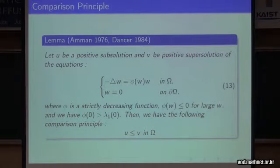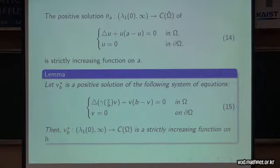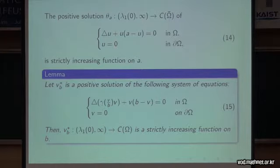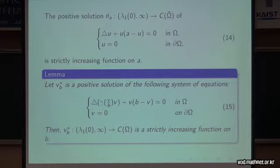We will also use a well-known comparison principle for this model with the same assumption on phi. By this comparison principle, for example, if the equation is of this form, we will denote the positive solution as theta-a. This theta-a is a strictly increasing function in a. Based on the comparison principle, we can show that our semi-trivial solution is also a strictly increasing function in b.